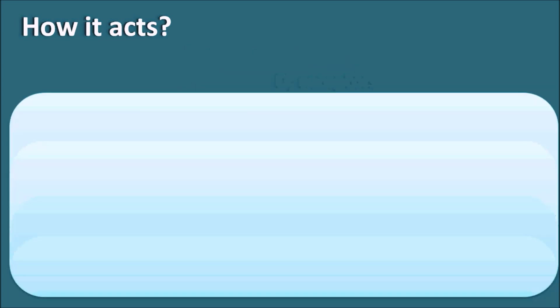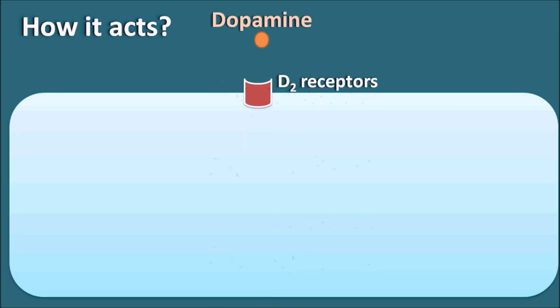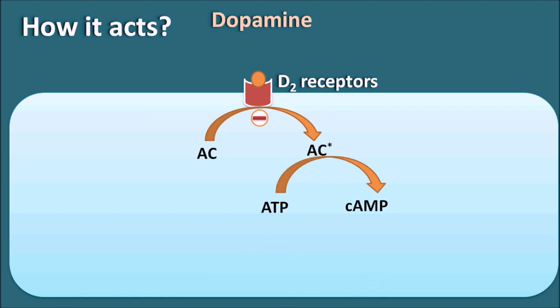At the molecular level, in the striatum we observe expression of D2 receptors on which dopamine acts. These D2 receptors are G-protein coupled receptors linked with different secondary messenger systems. One such system is the adenylyl cyclase system — when D2 receptors are occupied, they inhibit the conversion of adenylyl cyclase into its active form, which normally converts ATP into cyclic AMP.